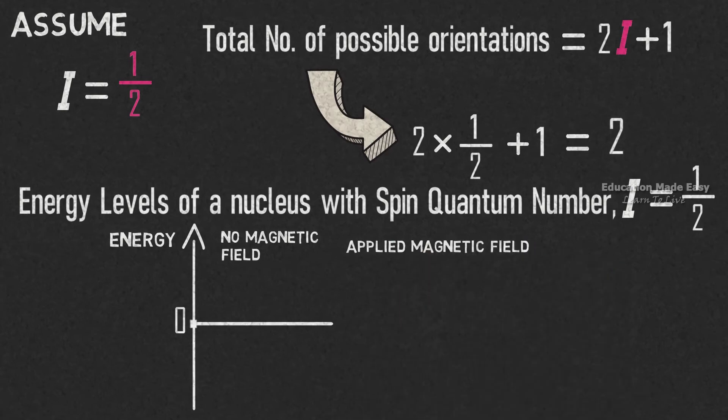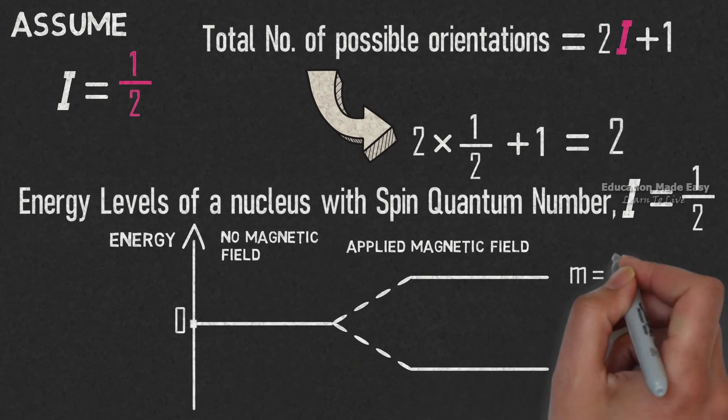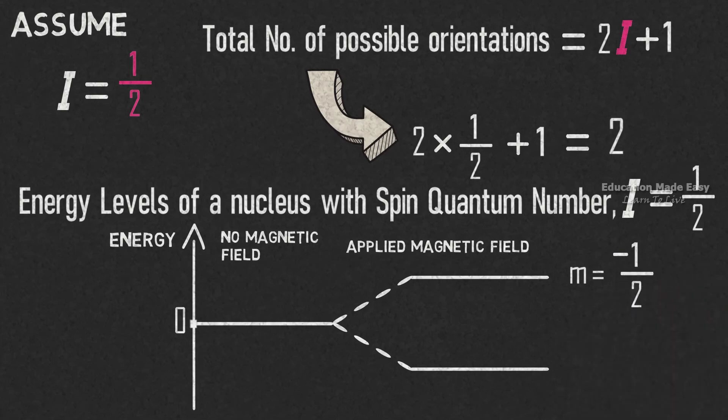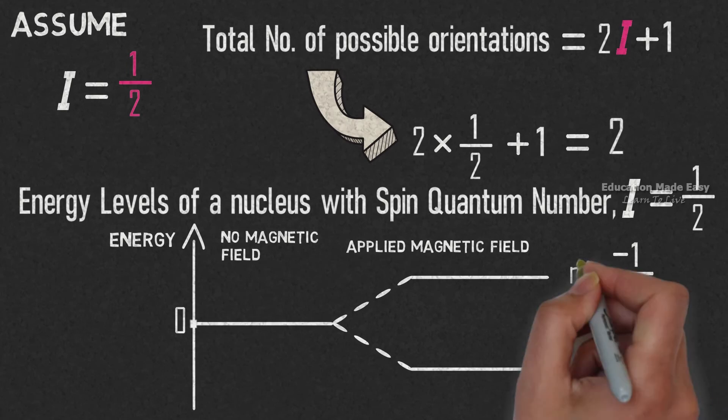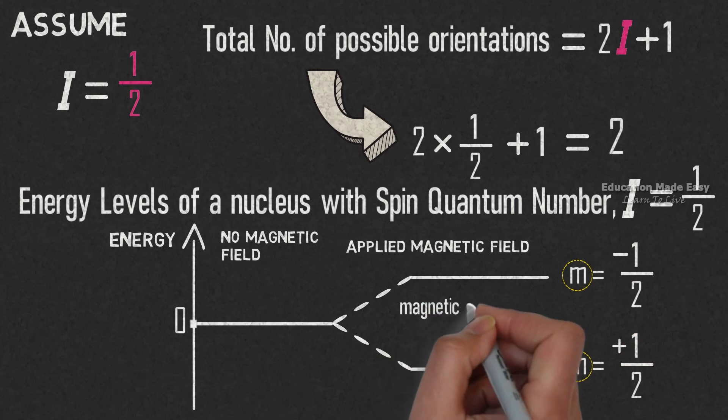With the application of a magnetic field, the energy levels of the two orientations are separated as shown. The higher energy orientation has the value of M equal to minus 1/2, whereas the lower energy orientation has the value of M equal to plus 1/2. Here, M represents the magnetic quantum number.